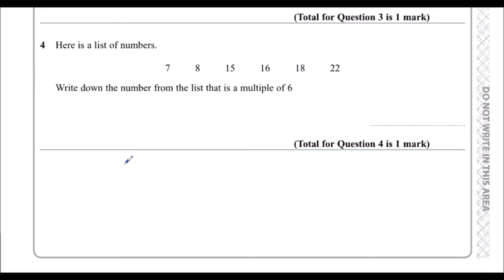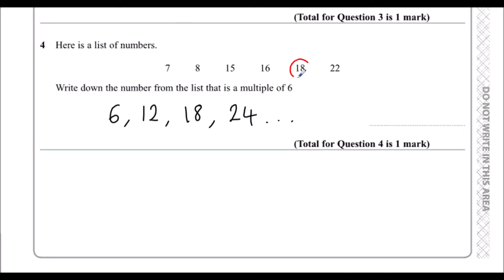Question 4: here is a list of numbers, and we need to write down from the list the multiple of 6. The multiples of 6 are the numbers in the 6 times table: 6, 12, 18, 24, and so on. So which of these numbers is a multiple of 6? 18. 18 is in the 6 times table, so 18 is a multiple of 6.